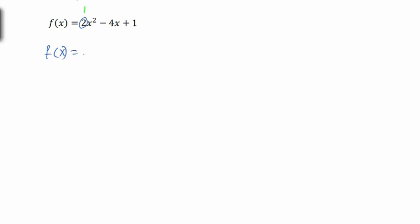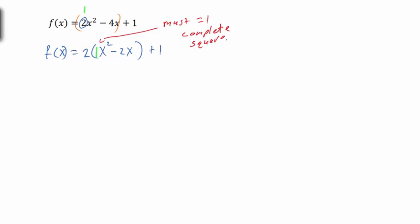To make the coefficient 1, I'm going to group the first two terms — 2x² - 4x — and factor out the 2. Factoring out the 2 gives us x² - 2x, and we leave the +1 on the outside of the parentheses, since we're only factoring 2 out of the x² and x terms. Now the coefficient of x² inside is 1, which allows us to complete the square.